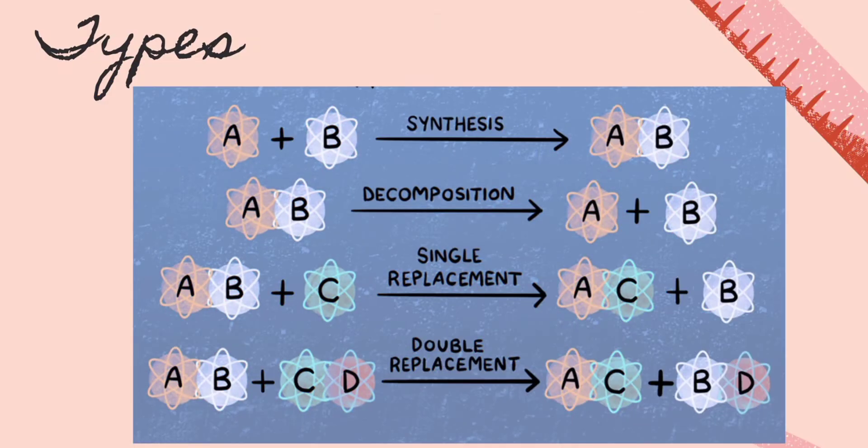These are the types of chemical reactions. First, we have synthesis reaction. Synthesis reaction is one in which two or more substances are combined to form a more complex one. In other words, synthesis reaction is a combination reaction. The general form of synthesis reaction is A plus B to form AB.